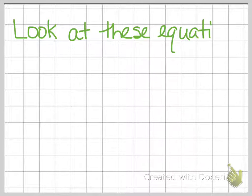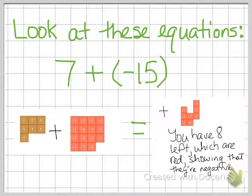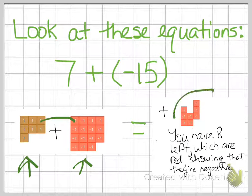Look at the following equation. Here you have 7 plus negative 15. That is represented by having 7 positives and 15 negatives. And if you remember the app that we used, when you drag one of those over top to unlike colors, they cancel each other out. They make them disappear. And then what you're left with is 8 red tiles, and because they are red, that means that they're negative. So our answer here would be negative 8.